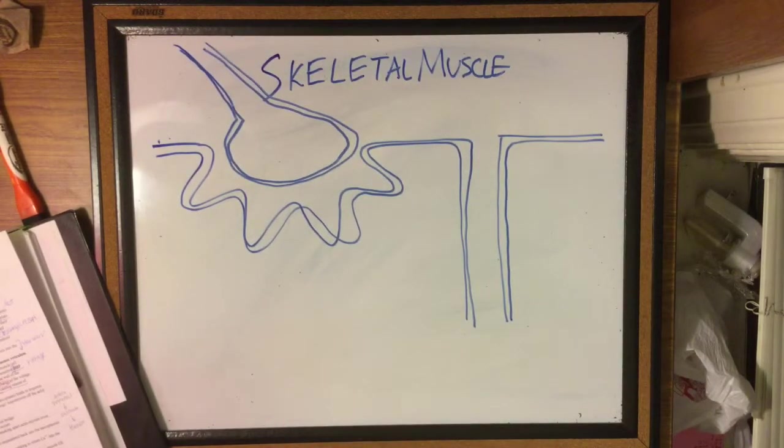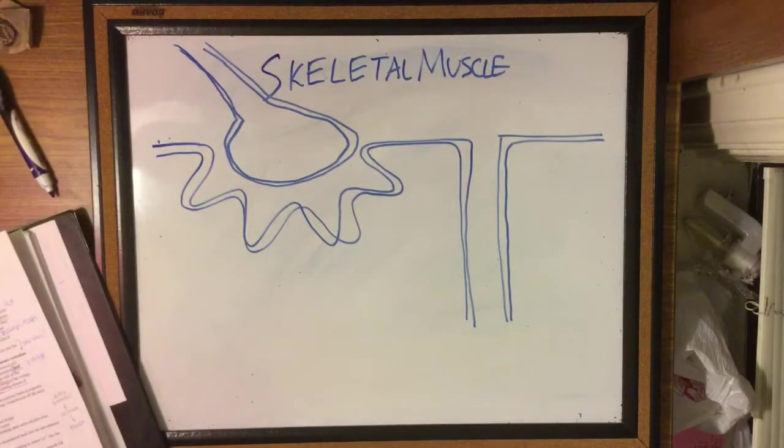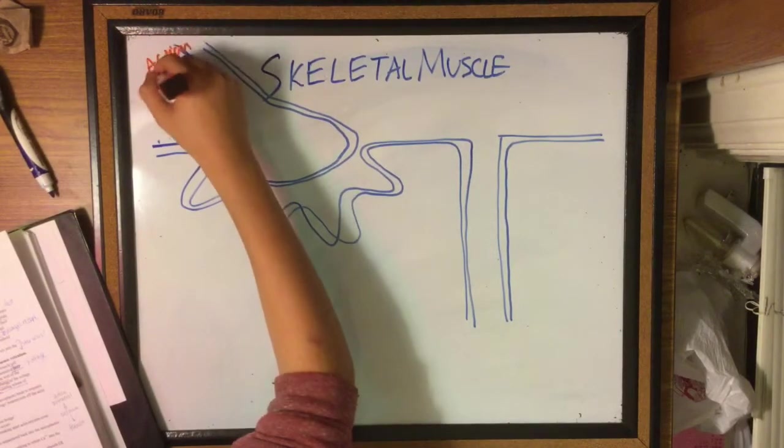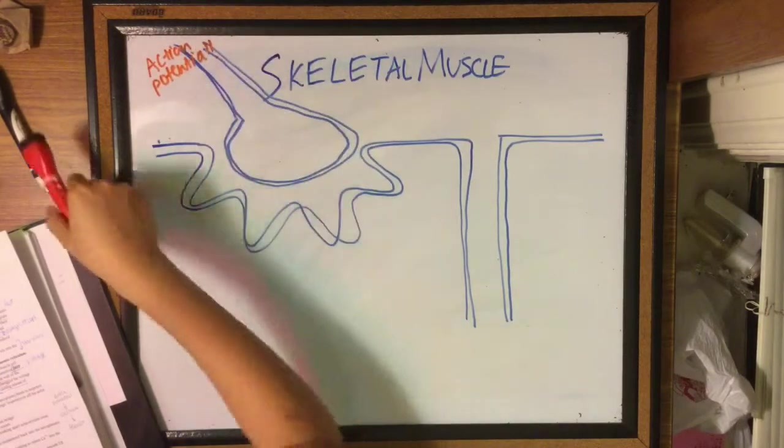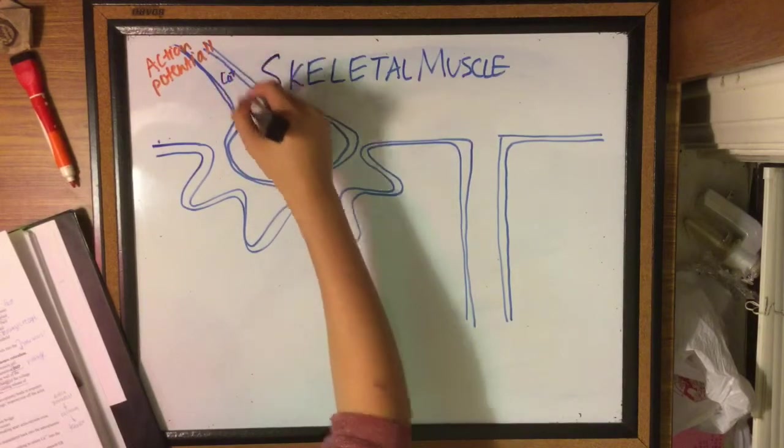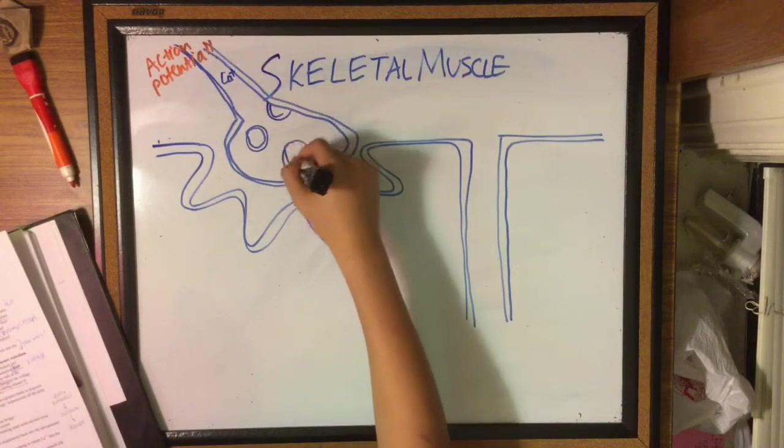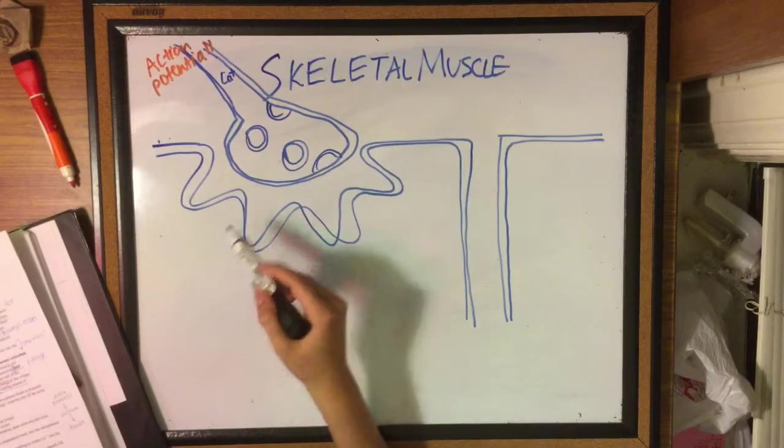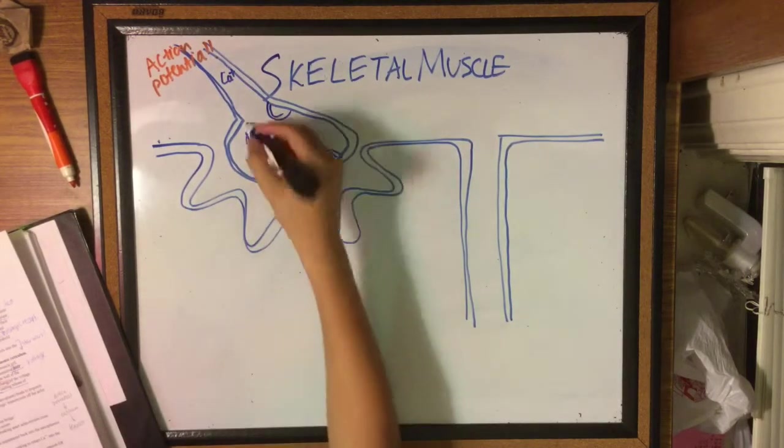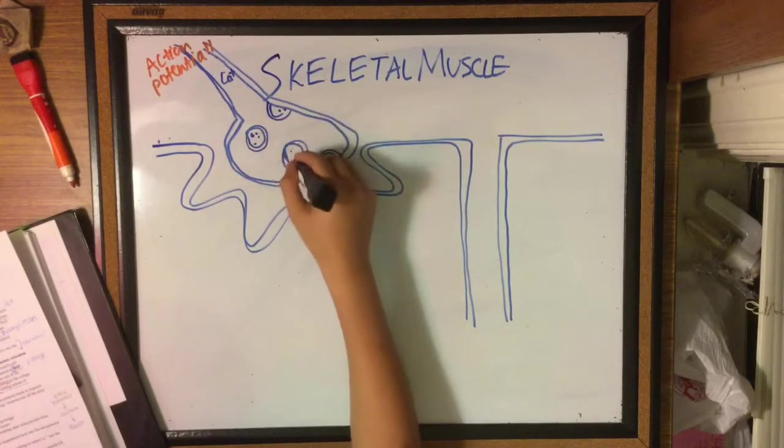Keep in mind that skeletal muscle is responsible for powering voluntary movement. So first thing that happens is that an action potential is conducted down a neuron to the axon terminal. Here the voltage-gated calcium channels open and calcium enters into the axon terminal going down its electrochemical gradient.